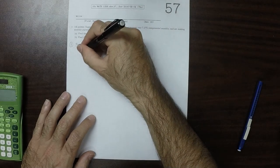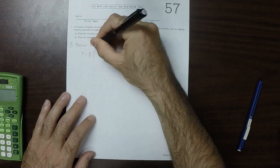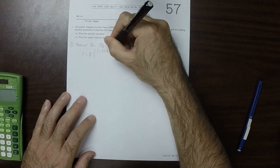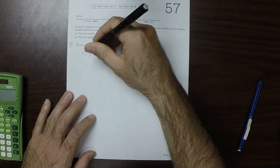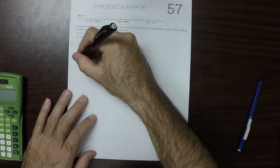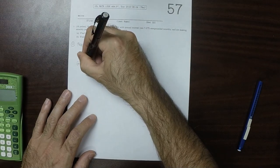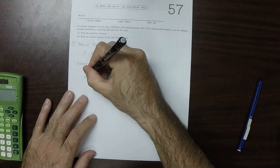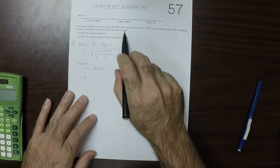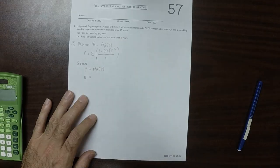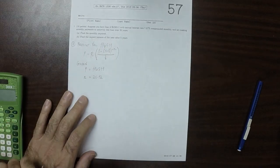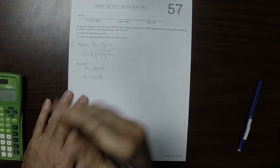We're going to use this formula: P equals R multiplied by 1 minus 1 plus i to the negative n, over i. Given P is $196,511, n is 25 years with monthly payments, so that would be 25 times 12. That's the number of periods, that's 300.